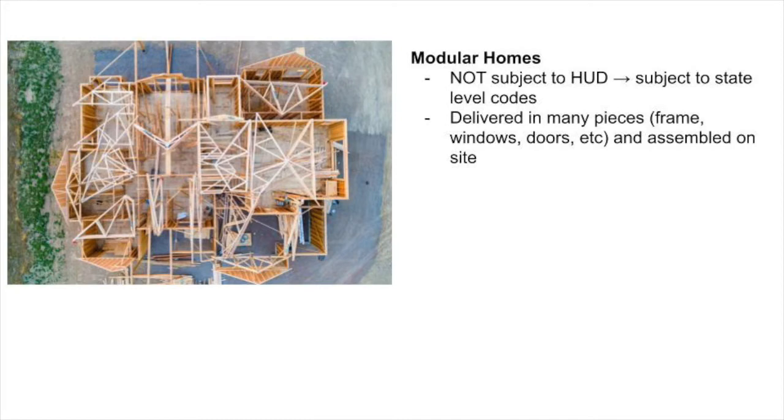A modular home is also built in a factory and has lots of options for upgrades and customizations. The main difference from a manufactured home is that modular homes are built in many much smaller pieces — more similar to a stick-built house. The pieces show up as frames, walls, windows, and doors, and are assembled together on the property. Manufactured homes, by contrast, arrive in just one or two large sections, already mostly completed. Modular homes are governed by local state building codes, unlike manufactured homes which are governed by HUD at the national level, and state and HUD requirements are not always the same. For financing, modular homes likely fall under a new construction loan — check with your bank and the modular home company for guidance.